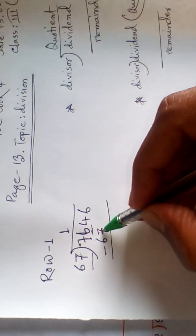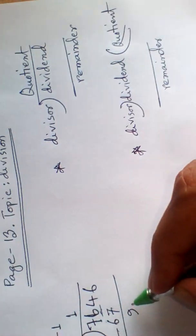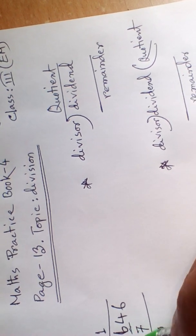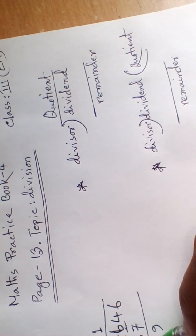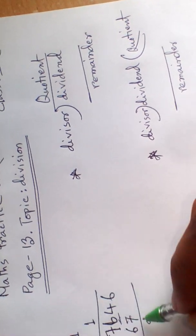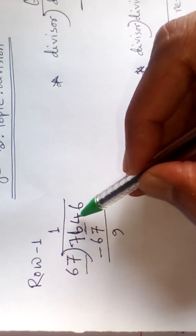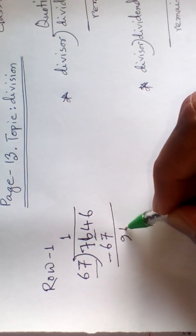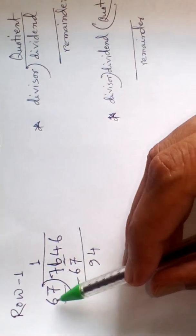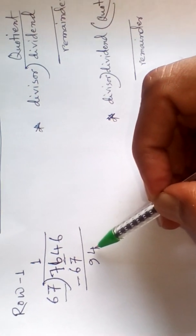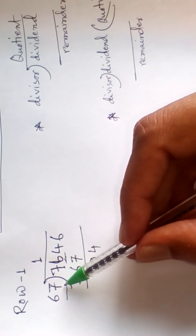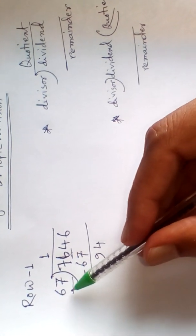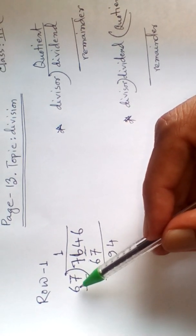16 minus 7 equals 9. Carry 1. 6 plus 1 is 7. 7 minus 7 equals 0 — the leading 0 is not necessary. Now 6 is brought down after 9. Then, joining the remainder, it will be 94. How many times of 67 becomes 94? Again we omit the 1's place digit — that is 7 and 4 are omitted. Then we calculate using 6 and 9.